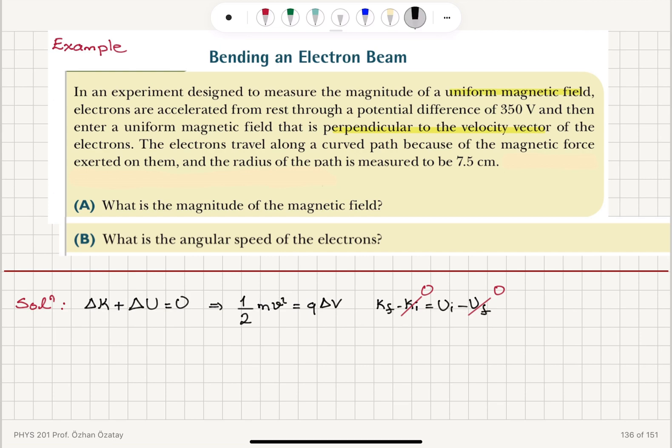So, we can find the speed. Then v is equal to 2q delta v divided by m, square root.